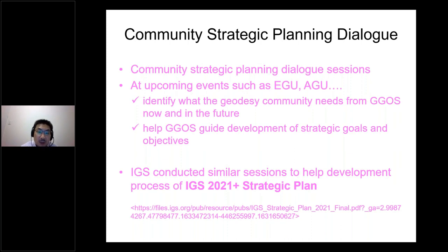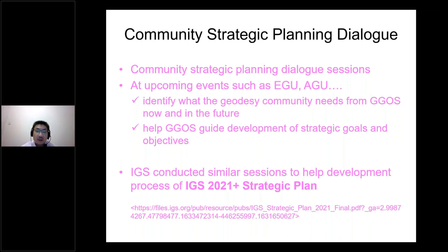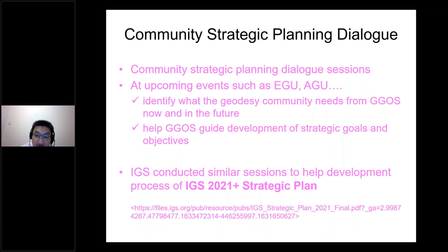The purpose of the sessions is to identify what the geodesy community needs going forward, and to help guide GIGOS development of goals and objectives. IGS also conducted similar sessions to help with the development process of the IGS 2020-21 plus strategic plan. Alyson Kradok, the director of the IGS Central Bureau, will provide a brief report on the IGS 2021 plus strategic plan as one of the best practices for the GIGOS strategic plan.